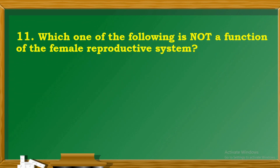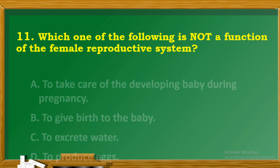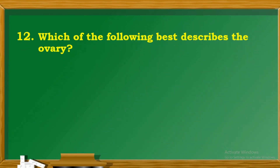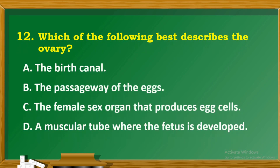Question 11: Which one of the following is not a function of the female reproductive system? A. To take care of the developing baby during pregnancy. B. To give birth to the baby. C. To excrete water. D. To produce eggs. Question 12: Which of the following best describes the ovary? A. The birth canal. B. The passageway of the eggs. C. The female sex organ that produces egg cells. D. A muscular tube where the fetus is developed.